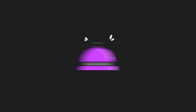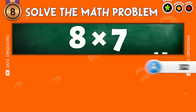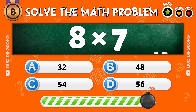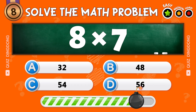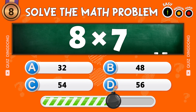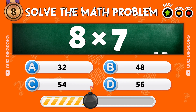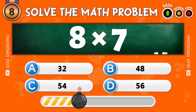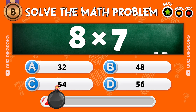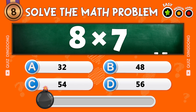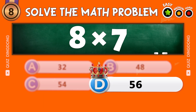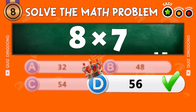Almost there! What's 8 times 7? That's 56! Great work!